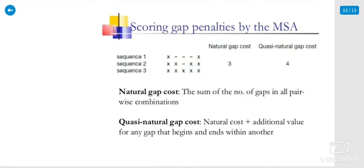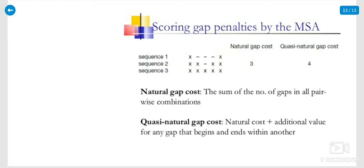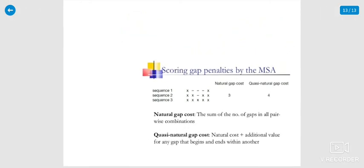The final slide shows scoring gap penalties for multiple sequence alignment. There is the natural gap cost and the quasi-natural gap cost for sequences 1, 2, and 3. The natural gap cost is the sum of the number of gaps in all pairwise combinations. The quasi-natural gap cost equals the natural cost plus an additional value for any gap that begins and ends within another sequence.